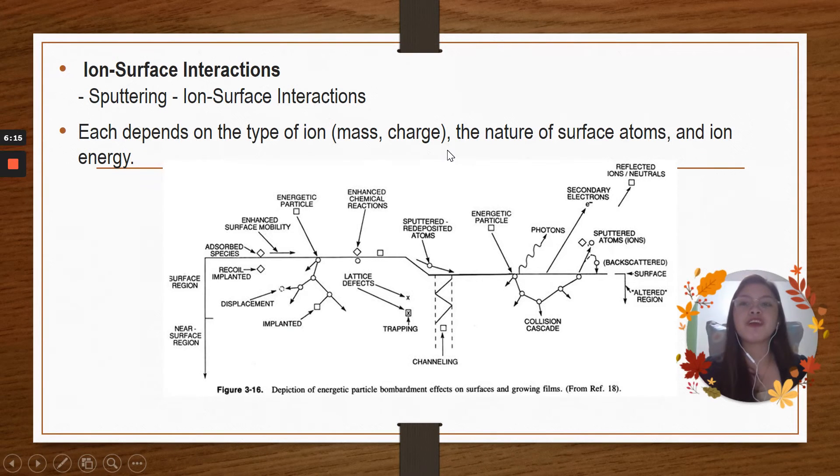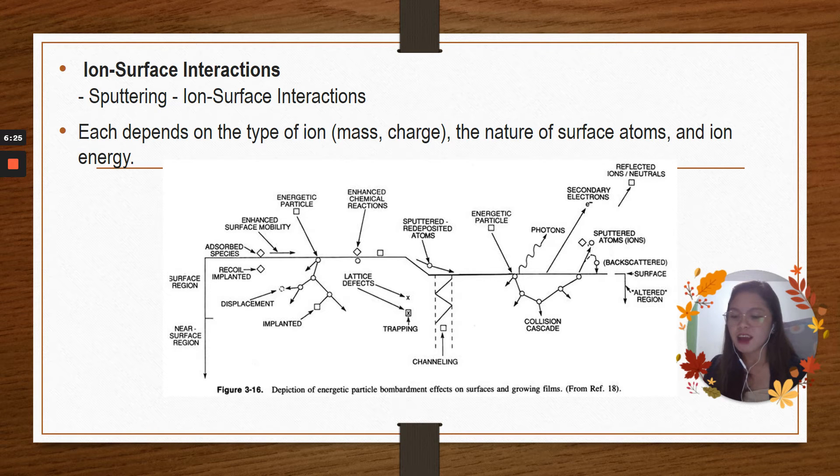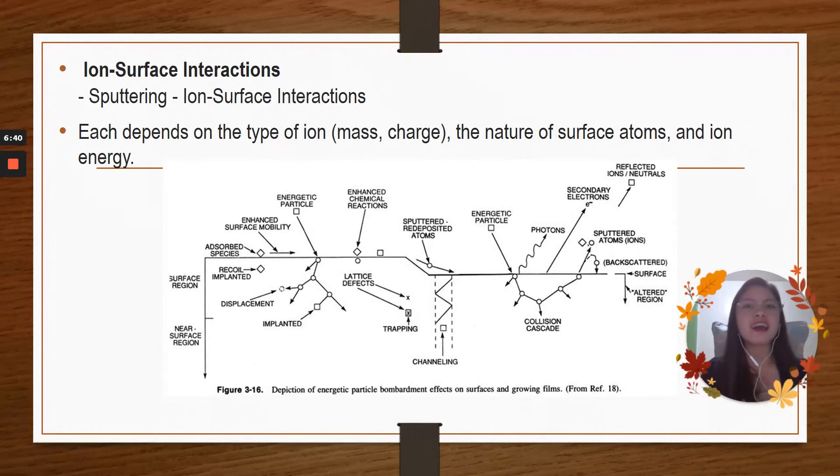For the next part, we have the ion-surface interactions. We have the sputtering and ion-surface interactions. For sputtering, the meaning of sputtering refers to the removal of material from a target by the impacts of high-energy particles. But also, we have this one called ion-sputtering. So what is ion-sputtering? Ion-sputtering is a phenomenon where atoms are sputtered from a solid surface when ionized and accelerated atom or molecules hit the solid surface. This phenomenon is utilized for formation of a thin film on a solid surface, specimen coating, and ion etching.